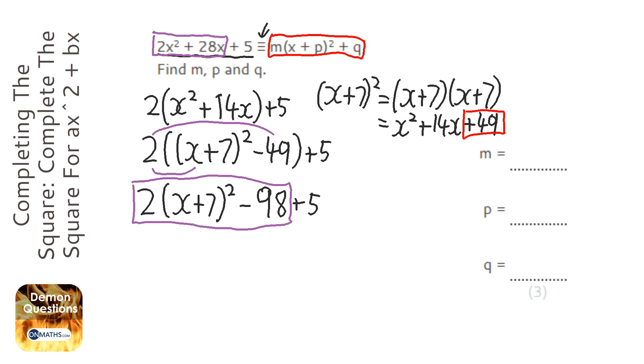But at this point here, we've got the minus 98 and we've got the plus 5, so I can deal with that now. So if I just rewrite the bracket bit, and now what I want to do is minus 98 plus 5, which is minus 93.